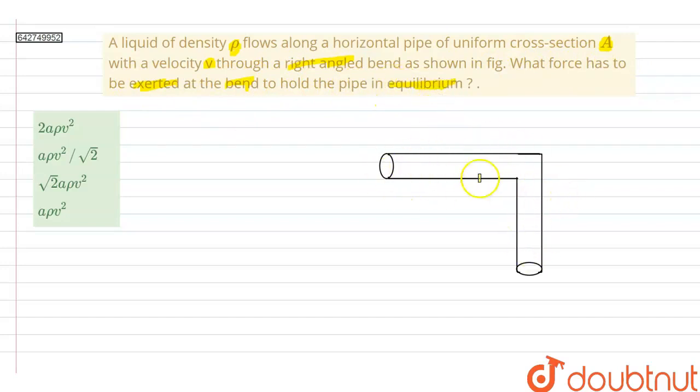So this is the pipe which we are shown and there is a 90 degree bend in it. So here we are given that the liquid is travelling with some velocity V in this direction. And as soon as it hits the wall of pipe here, the liquid will change its direction of velocity downwards.